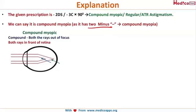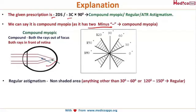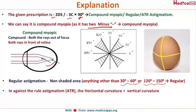Because it has two minuses — one minus means simple myopic, so two minuses means compound myopia, meaning both rays are focusing in front of the retina. It is regular astigmatism because the axis is not within 30 to 60 or 120 to 180 degrees — it's 90 degrees. And it's against-the-rule astigmatism because minus 90 is against the rule, and plus 90 is with the rule.